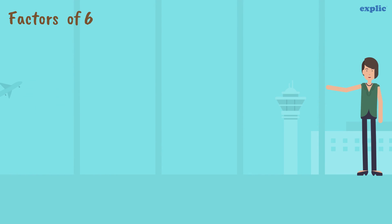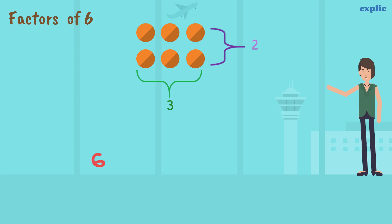As we learned in the previous lesson, some numbers can be represented in the form of a rectangle. For example, number 6 can be written as a multiple of 2 and 3. Therefore, 2 and 3 are the factors of 6.